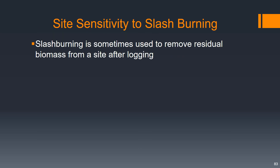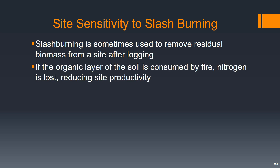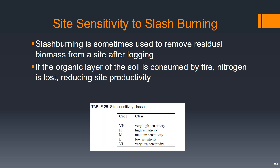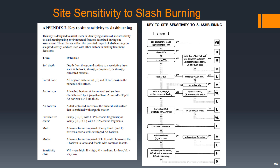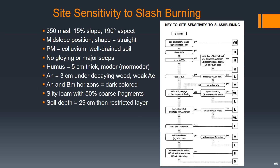After harvesting, sometimes the slash — the residual biomass — is burned to remove it from the site. If the organic layer of the soil is consumed by that fire, some nitrogen is lost and this reduces site productivity. For this reason, there's a key we can use to determine the sensitivity of a given site to slash burning, similar to the SMR or SNR key. The first question is: is the soil less than 25 centimeters deep and/or coarse fragment content greater than 80%? Neither of those are true. Is the slope greater than 80%? No.